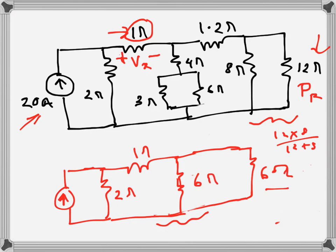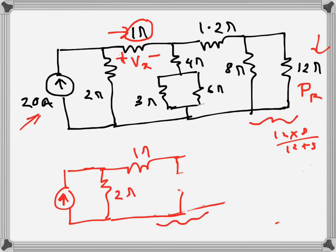Now these two 6Ω resistances are in parallel. Since they are of equal value, the equivalent resistance is simply half, which is 3Ω. So we reduce the circuit down to 3Ω.